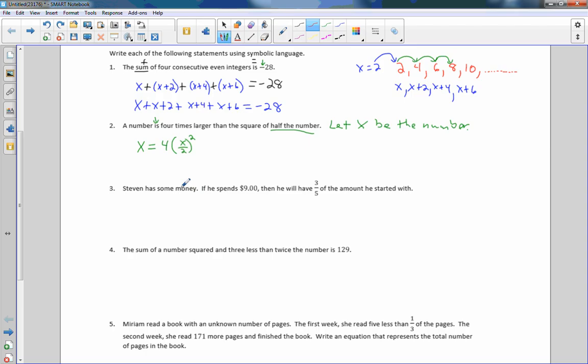Next one. Steven has some money. Some money. We can use x, we can use any other variable. Let's just stick with x for now because it's going to lead into graphing probably eventually, and we usually use x and y for graphing. So Steven has some money x. If he spends nine dollars, then he will have three-fifths of the amount he started with. So he's got some money. Say it's a hundred dollars. X is a hundred. He spends nine of it. Well, one hundred minus nine would be ninety-one. So, no matter what the value he had, nine less than that is represented by the number, the amount he had minus nine. So, he spends nine dollars. There it is. X minus nine.